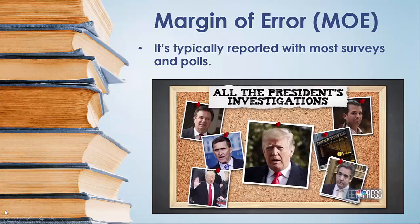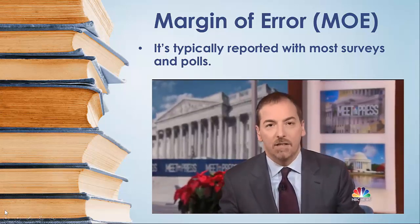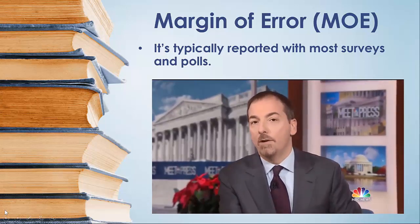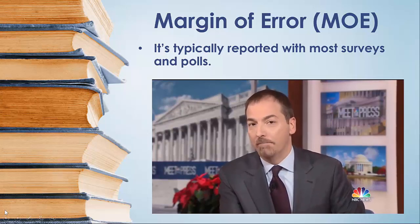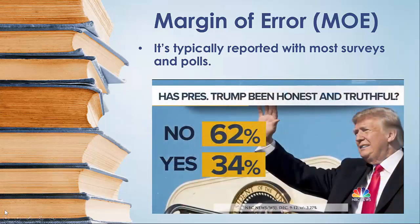This particular study was discussed on Meet the Press one morning. We have a brand new NBC News Wall Street Journal poll. On the Russia investigation, 62% say President Trump has not been honest and truthful — that's a growing number in our poll, and it's across the board: Democrats, Independents, and Republicans. Just 34% say he has been honest and truthful. You can see the margin of error reported at the bottom is plus or minus 3.27%.